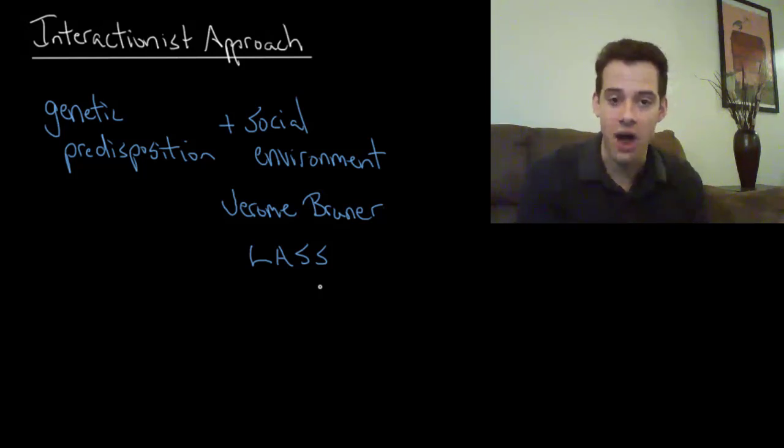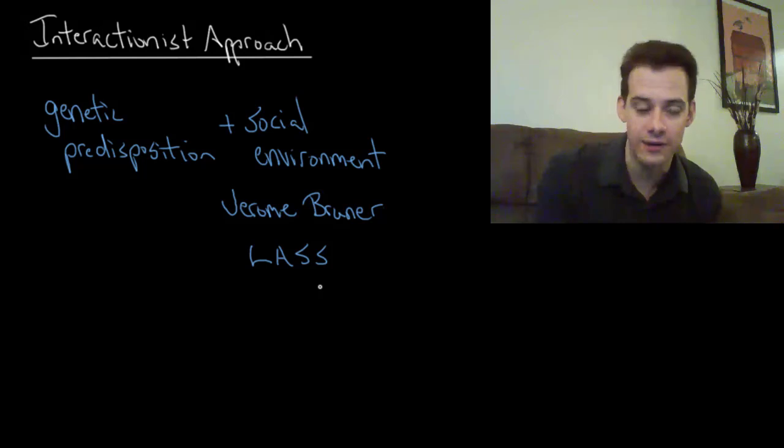It's not the case that adults simply talk and children listen and then they develop language, but adults do things like direct the child's attention to certain things. They tell a child what to focus on and they ask questions to the child and then they label things. They point things out and say, this is a dog, this is a cat.